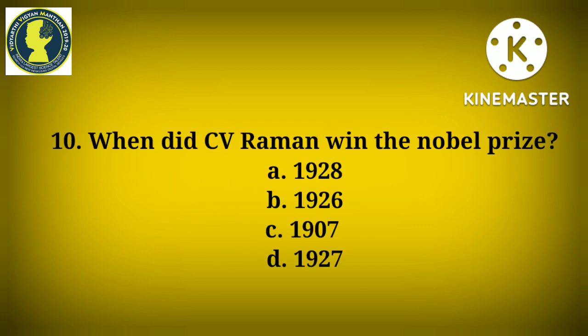The tenth and final question: When did CV Raman win the Nobel Prize? Option A: 1928. Option B: 1926. Option C: 1907. Option D: 1927. This question is for you — please answer in the comment section; I will be eagerly waiting for your answers.